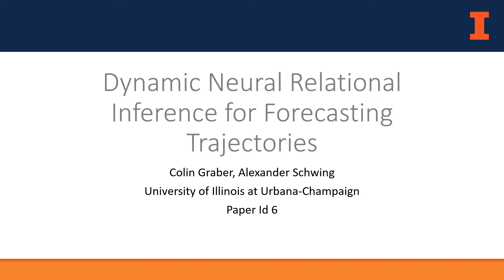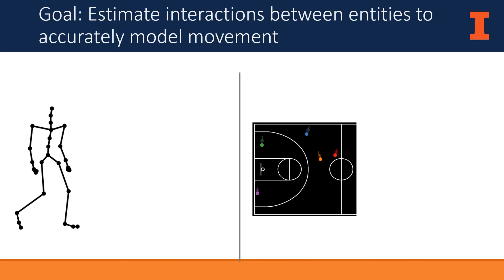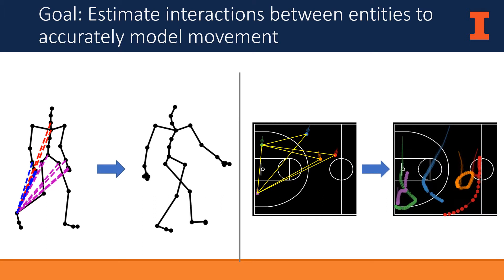Hi, I'm Colin and I'm here to present Dynamic Neural Relational Inference for Forecasting Trajectories. We are interested in modeling the movement of entities such as body joints or athletes in an arena. Their motion is influenced by the unseen interactions or relations they have with each other. Knowing how different entities interact can improve the ability to predict their future states.